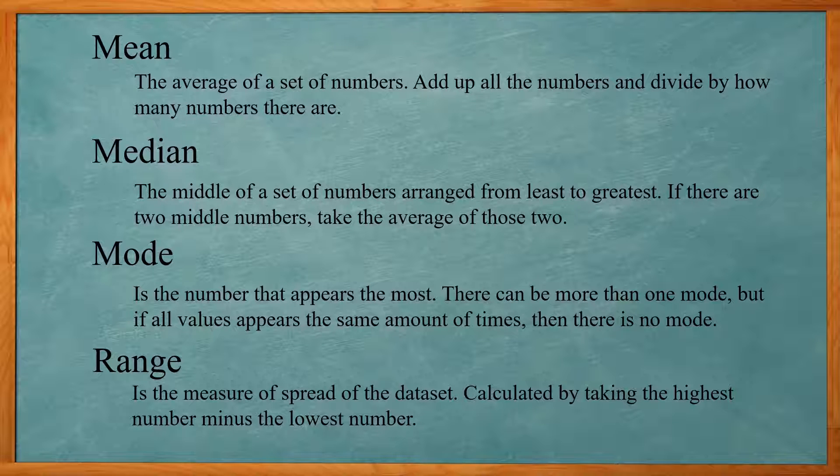The mode is simply the number that appears the most. If you have more than one number that appears the same amount of times, you have more than one mode. But if all the numbers have the same frequency, then there's no mode.